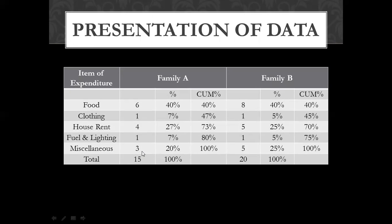We will divide the values into percentages. The percentages calculated are: 40%, then 40 plus 5 equals 45, then 45 plus 25 equals 70, then 75, reaching up to 75 and 100.